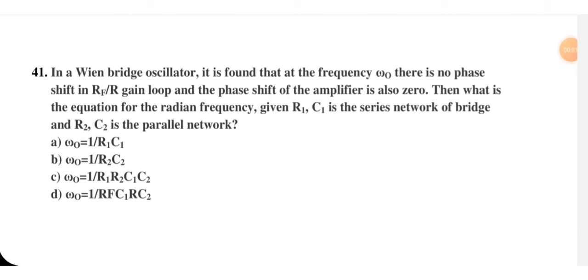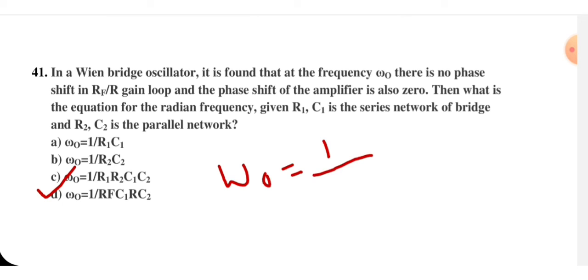In a Wien bridge oscillator, at frequency ω₀ there is no phase shift in R_F (feedback resistance) and R (input resistance) gain loop, and the phase shift of the amplifier is also zero. Given R1, C1 as the series network of the bridge and R2, C2 as the parallel network, the equation for the radian frequency ω₀ is option C — which can also be written as ω₀ = 1 / √(R1·R2·C1·C2).